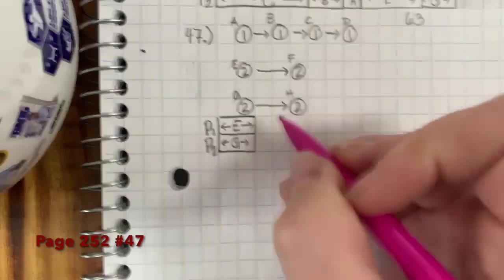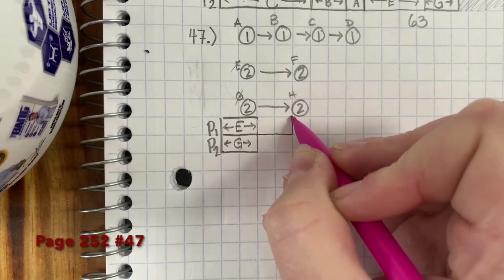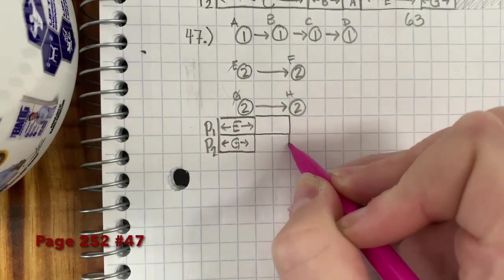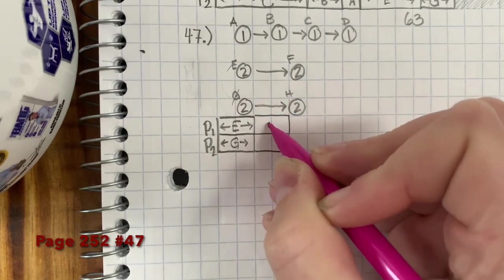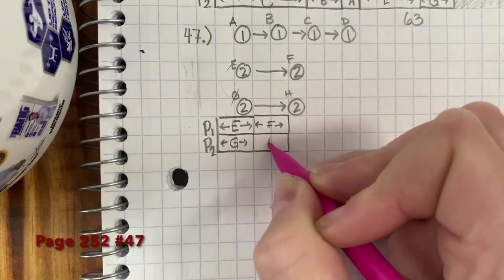Okay, once those are both done, we can do F, which would be 2. And H.